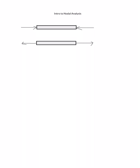In frame structures you'll have a combination of members in tension and in compression, and together they make a strong structure. Members in compression we refer to as struts, and members in tension we refer to as ties. So we talk about our members being struts and ties — for example, member A is in compression so it's a strut, and member B is in tension so it is a tie.